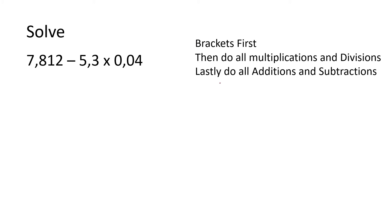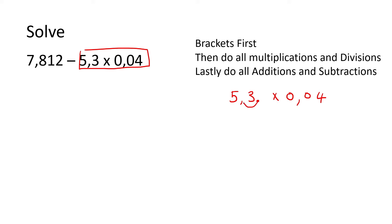So with this one, we know we should always do brackets first, but there aren't any. Then we do multiplication and division, so we do this part first. When multiplying with decimals, the first step is to count from the back — that's one place there and two places there, so in total three places that we must remember at the end.